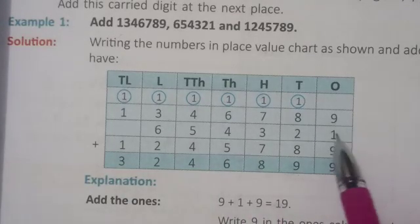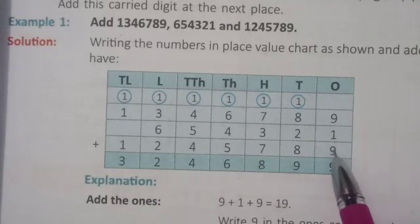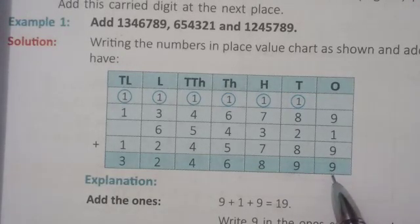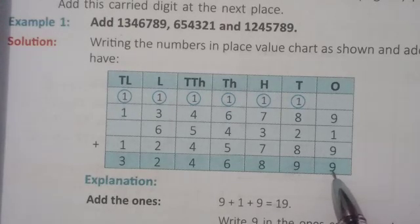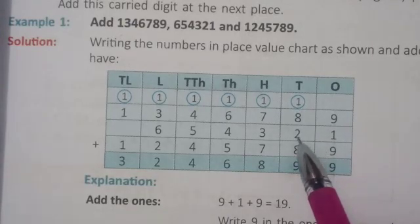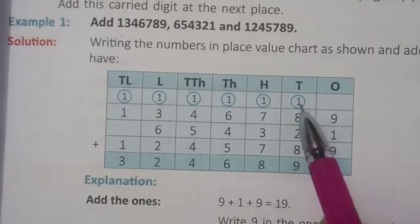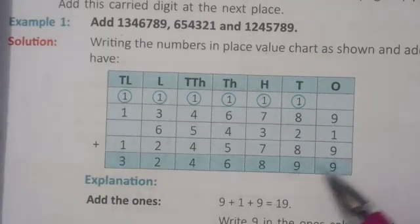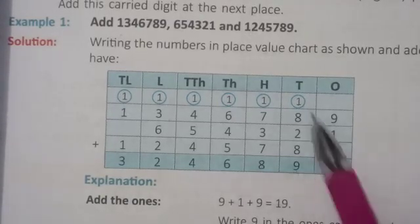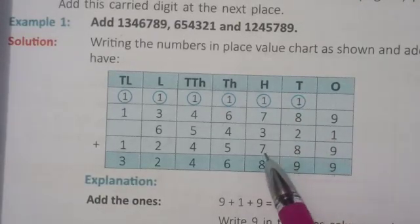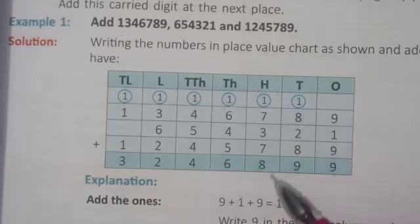For example, 9 plus 1 plus 9: 9 plus 1 is 10 and plus 9 is 19. So 9 is placed and 1 is carried to the next place. Then at the tens place: 10 plus 8 plus 1 is 19 — 9 is placed and 1 is carried. Then 19 to 9 is 9 and carry 1 to the hundreds place.